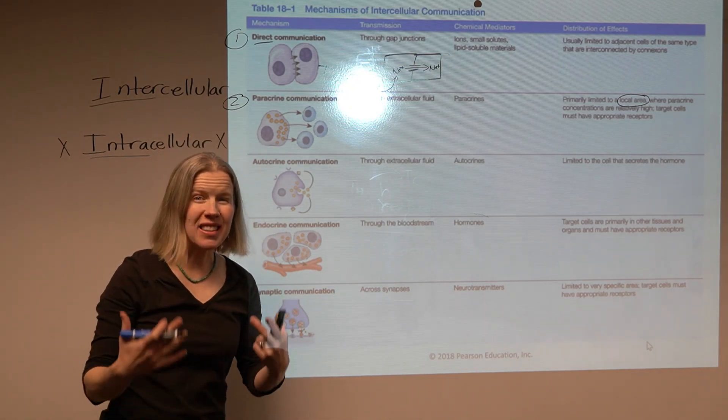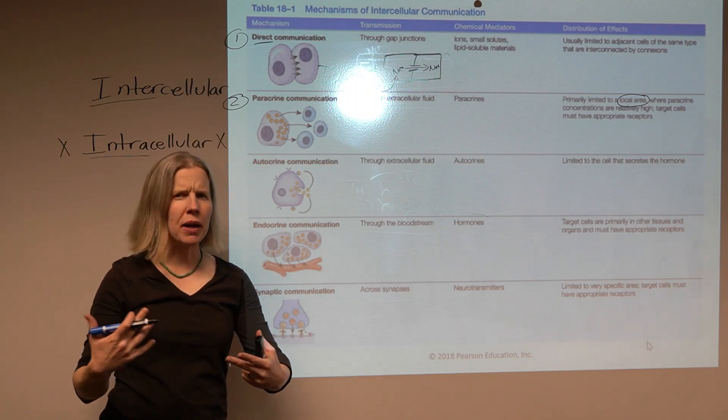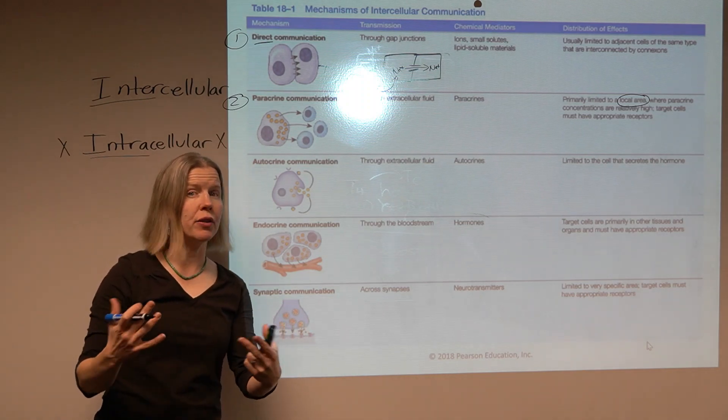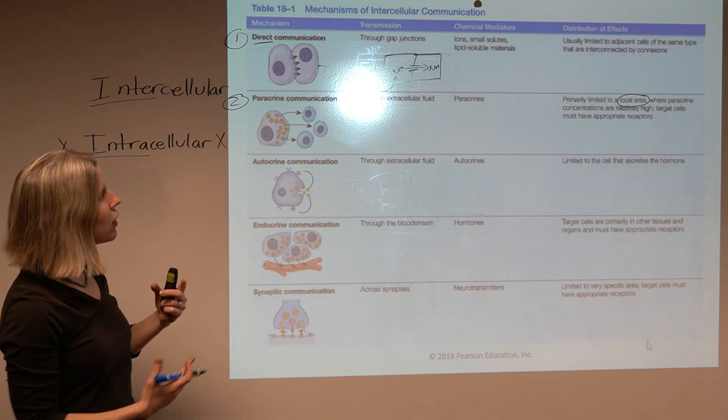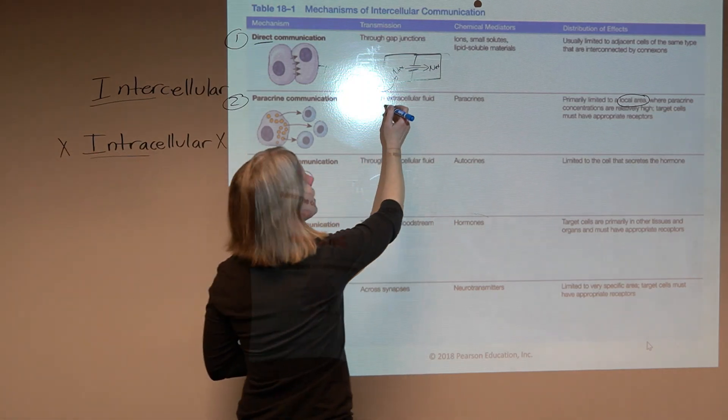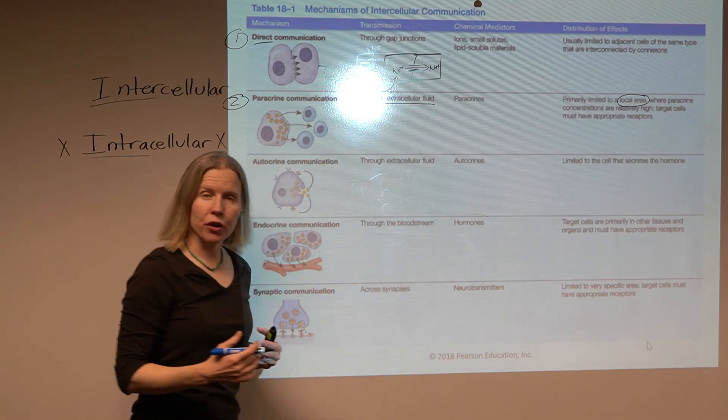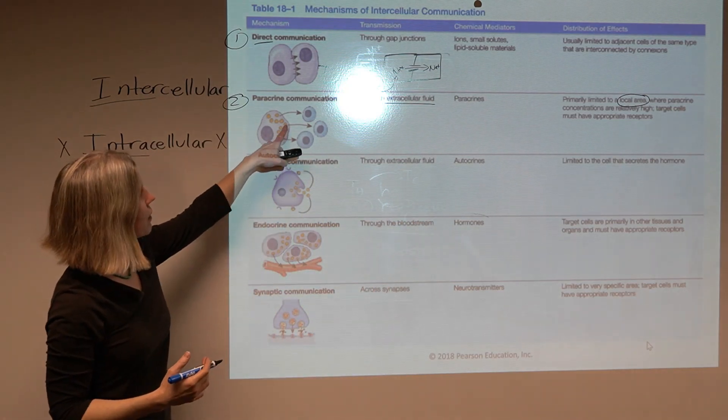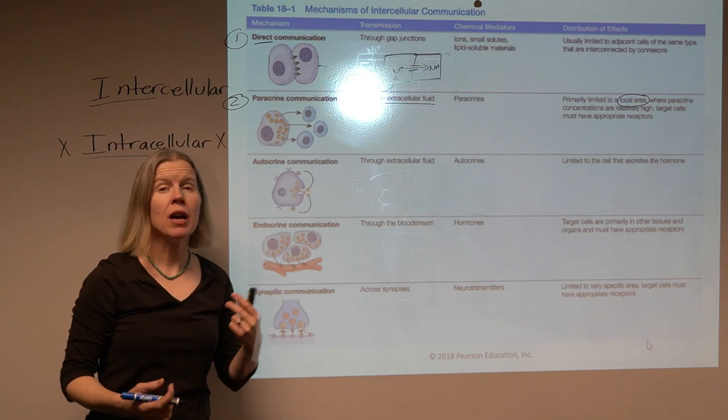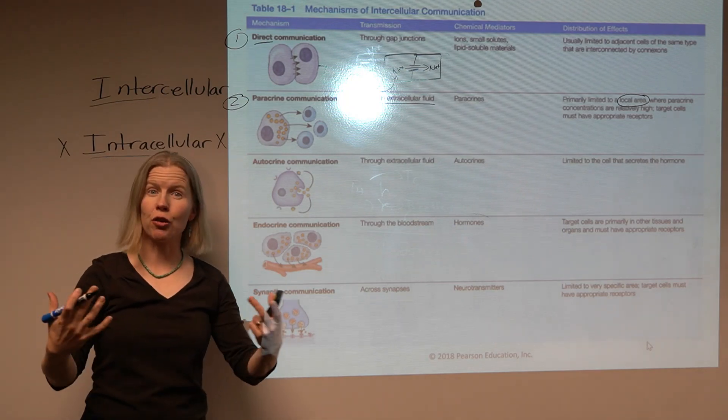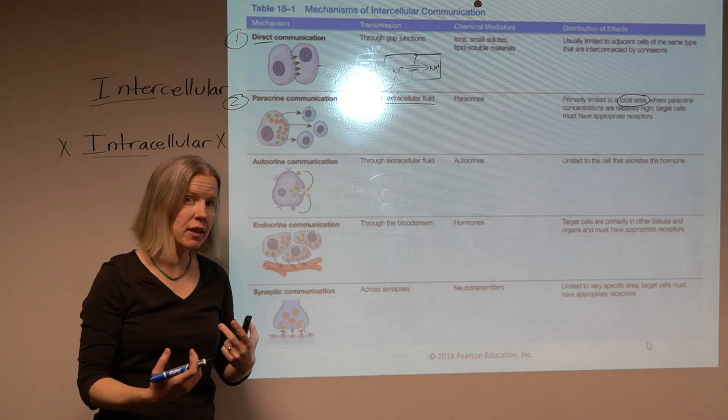It's within the same tissue and it's basically cells just talking to neighbors right around them. So paracrine communication takes place through the extracellular fluid. These yellow blobs are trying to show some kind of chemical being released and talking to the neighbor. Now that neighboring cell has to have the correct receptor to receive that message.